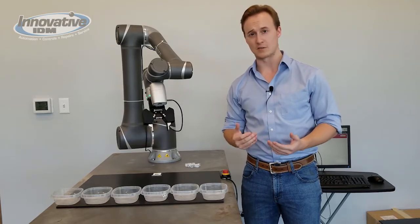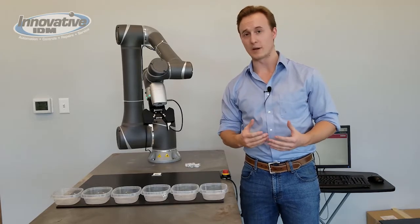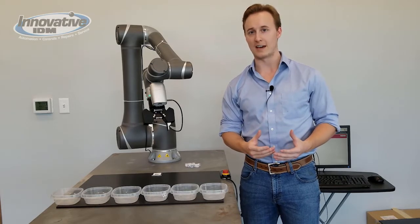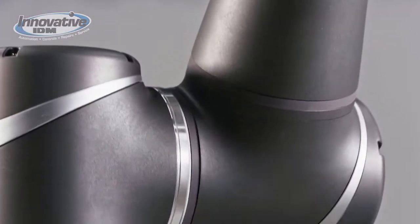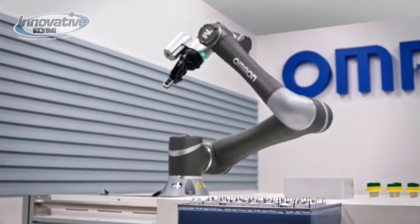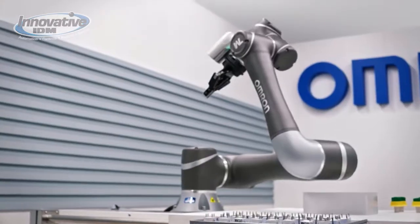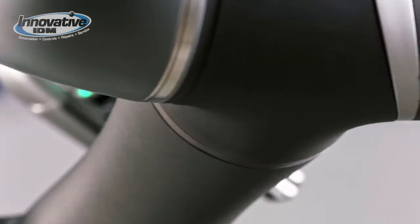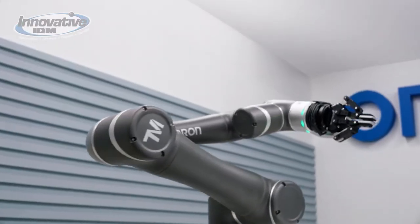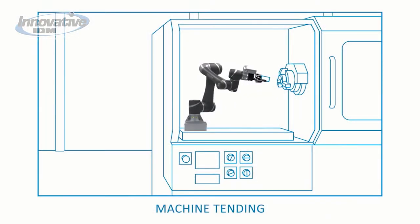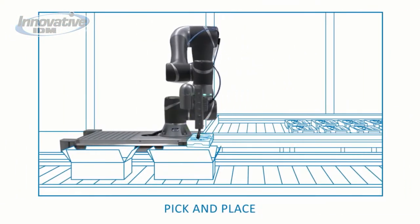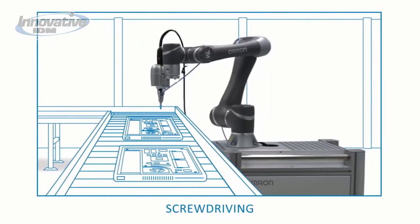So let's take a closer look at what makes this robot unique and what makes it so easy for people to use and integrate in their facilities, even if they don't have previous robot experience. The TM is a collaborative six-axis articulated arm with built-in vision. It comes in variations that reach between 900 and 1300 millimeters and capable payloads of between 4 and 14 kilograms. It's designed for applications like machine tending, pick and place, general material handling, screw driving, and many more possibilities.